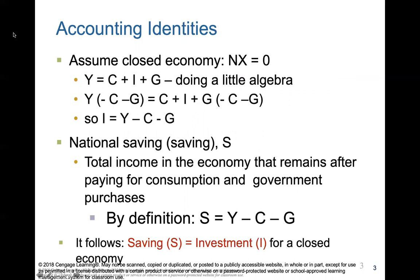If you assume a closed economy with no net exports and imports — similar to what may be happening with the coronavirus, where we may be closing off ports — then our GDP becomes a function of C plus I plus G. If you do a little algebra and take C and G away from both sides, the C and G cross out on the right side, and you end up with just I. So now I equals Y minus C minus G, meaning investments in the economy equal GDP minus consumer spending minus government spending.